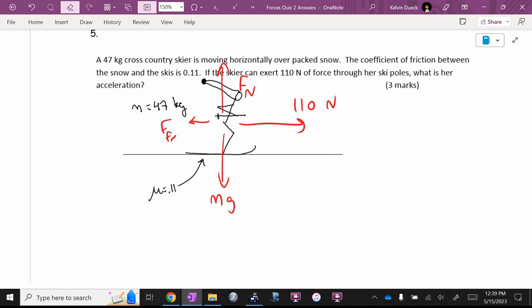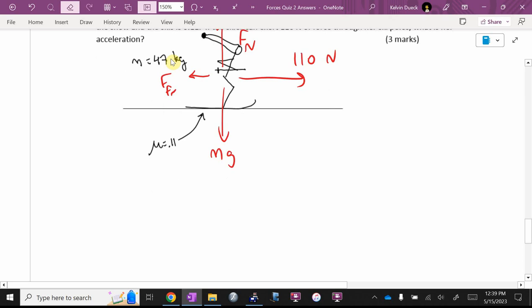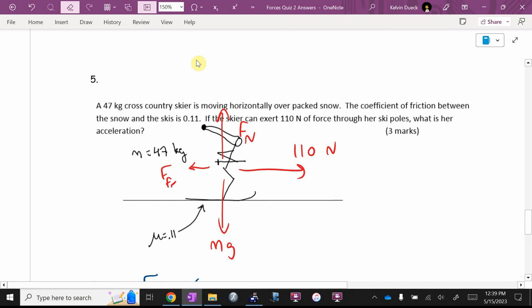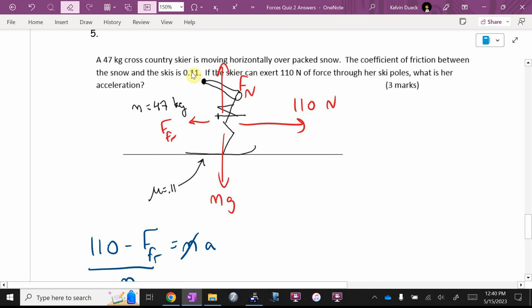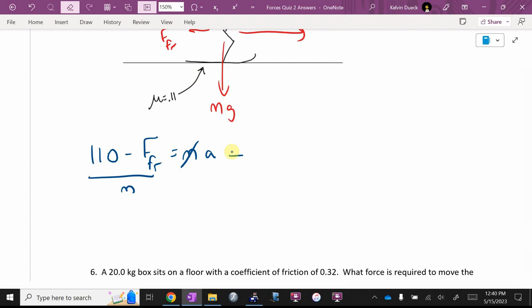They want me to find the acceleration. Okay. Who's winning? F applied, the 110. I'm just going to go straight to the 110 minus who's losing, friction, equals ma. Now I can go Cooper's theorem. Sorry? I don't know friction. I got coefficient of friction. I can figure out friction. Sorry? Oh, are we slowing down? I think I'm good right now because I can go like this. 110.